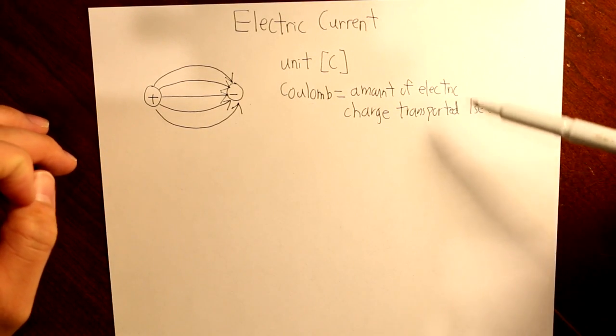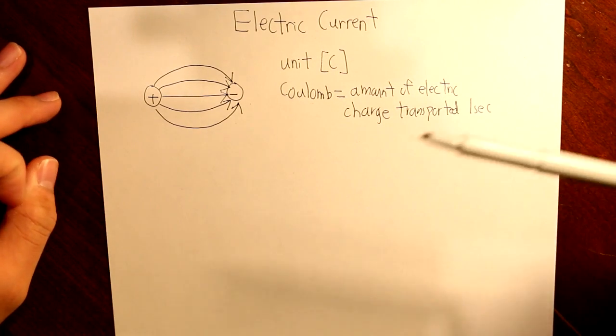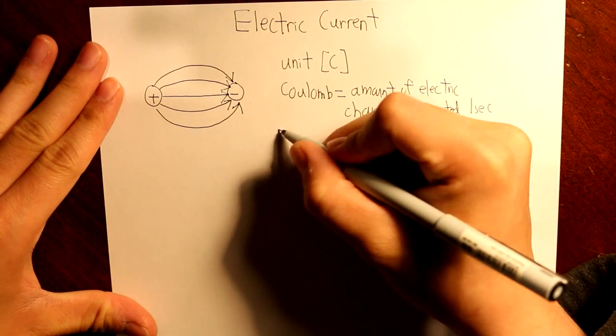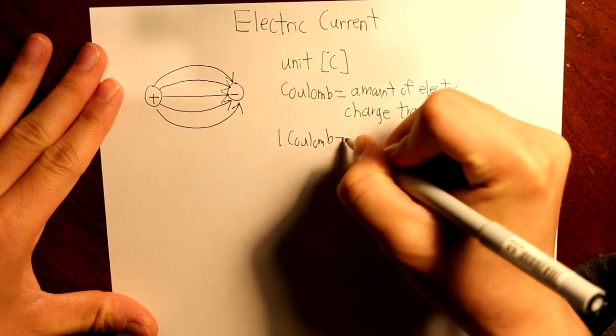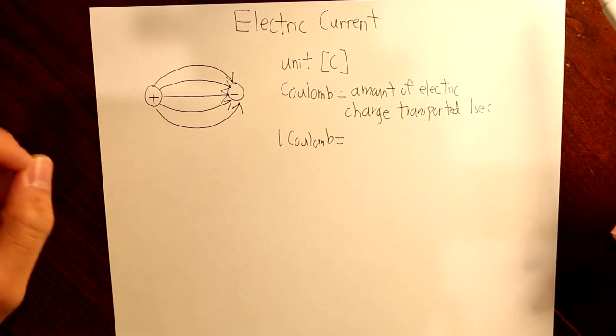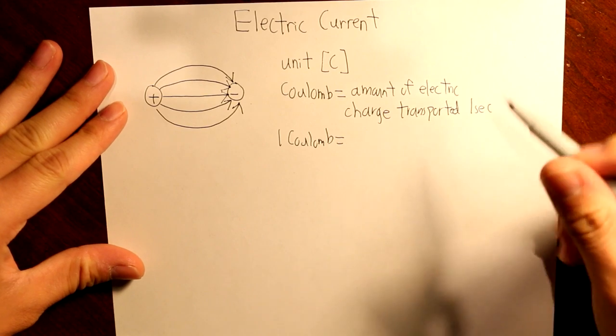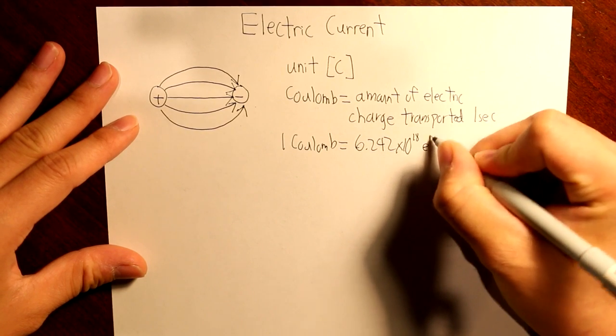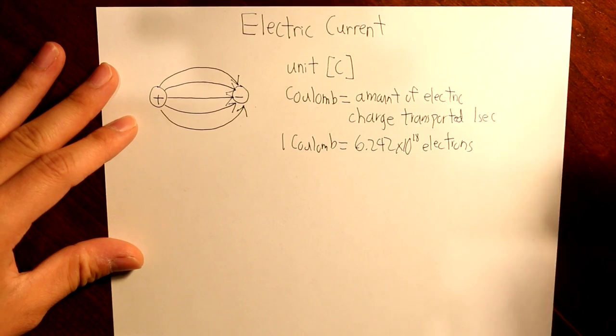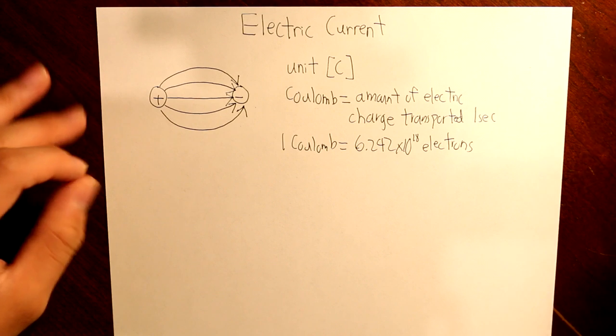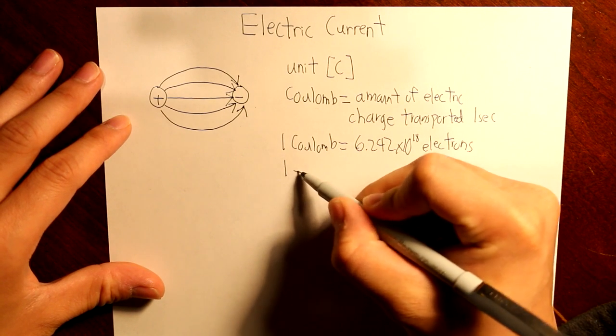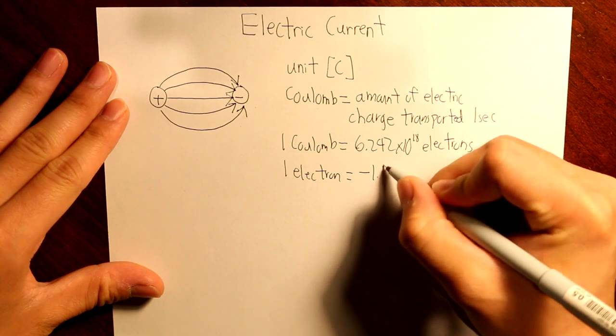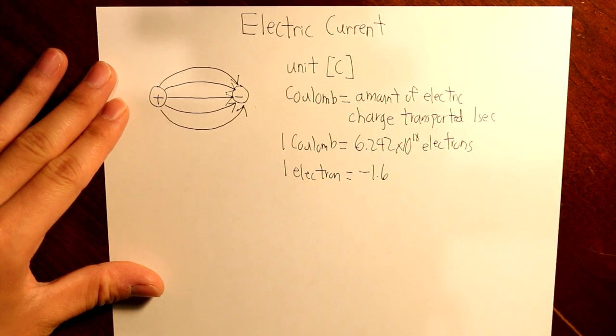And we also need to know that in this electric field, the only thing that is moving are electrons. So we have to take electrons into consideration. And one coulomb is equal to billions, if not trillions and trillions of electrons. More particularly, 10 to the power of 18 electrons. And one electron itself is equal to a minuscule of a single charge. More particularly, one electron is equal to 10 to the minus 19 coulombs. And we also have to consider negative here because an electron is a negative charge.